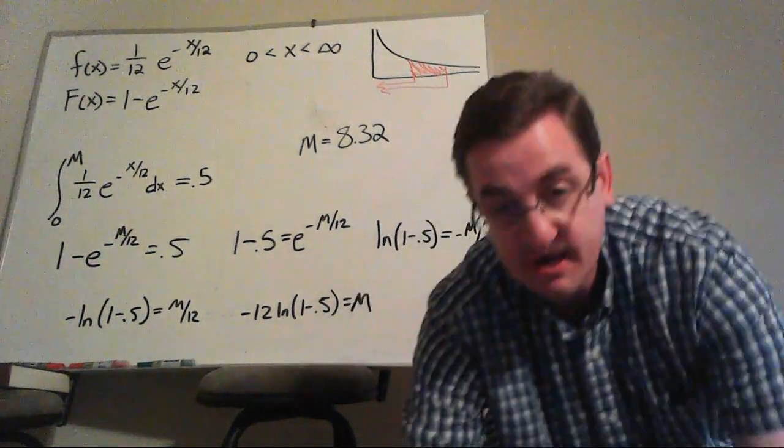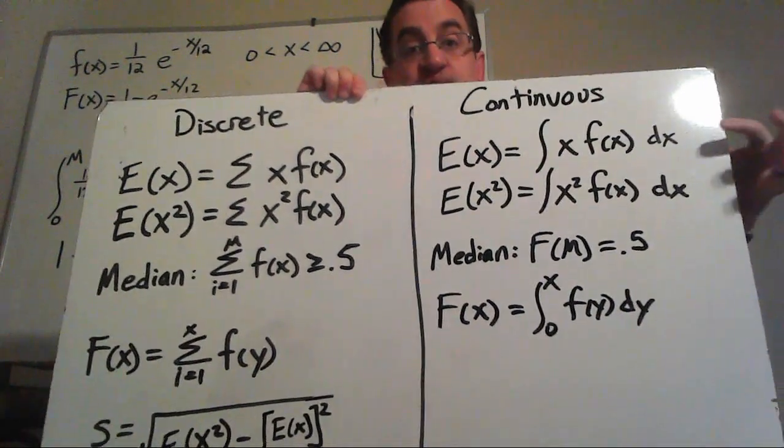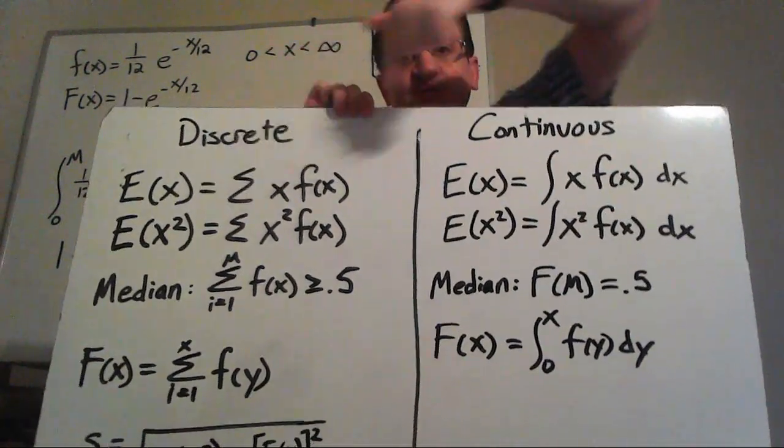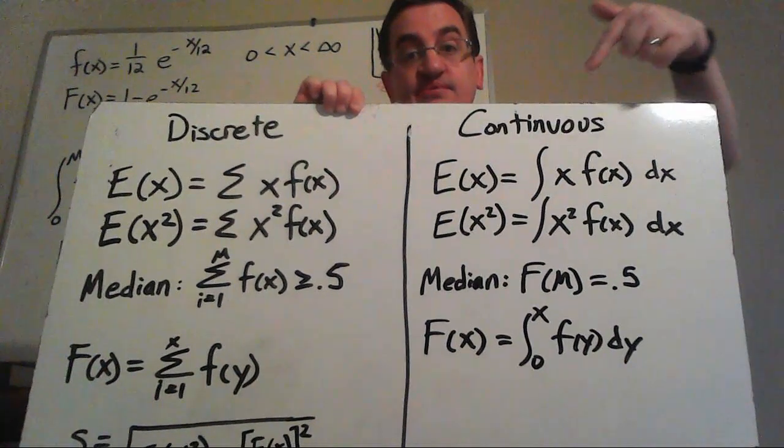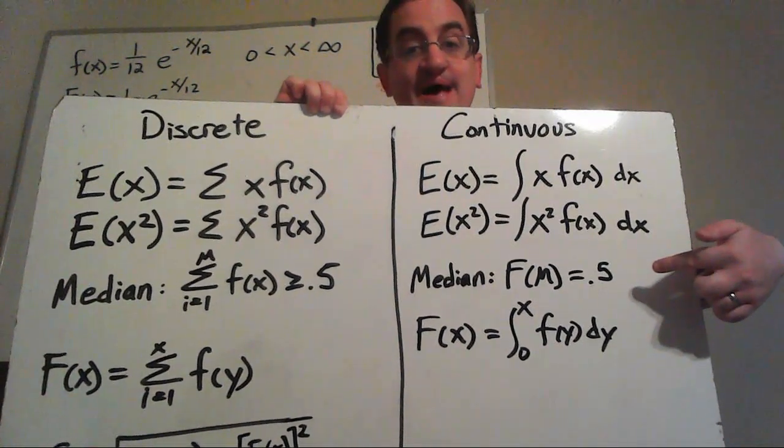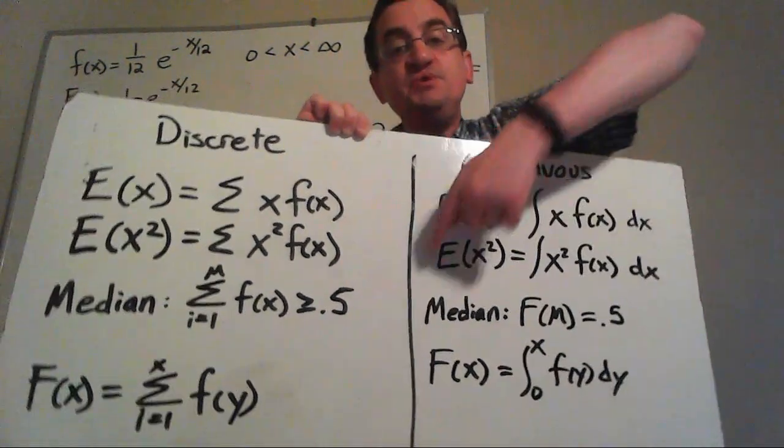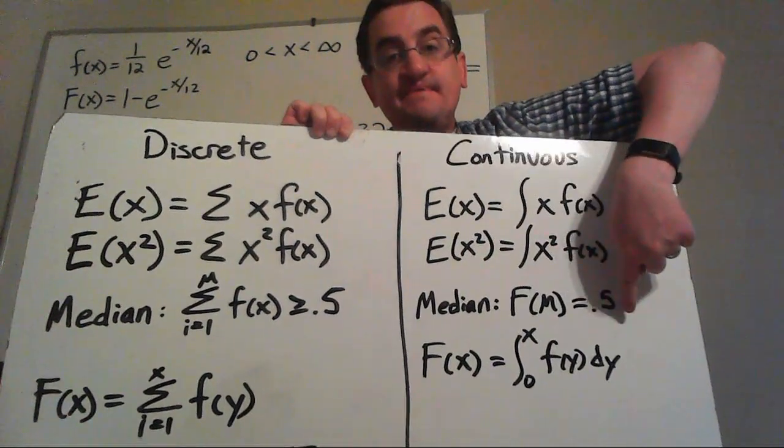So it will surprise you that all the stuff we did with the discrete stuff is going to match on the continuous side, except instead of summations, we're going to talk about using integrals. And here for the median, I'm going to write it using the capital F of m. How do you get that capital F? 0 up to x. And we use f of y dy.